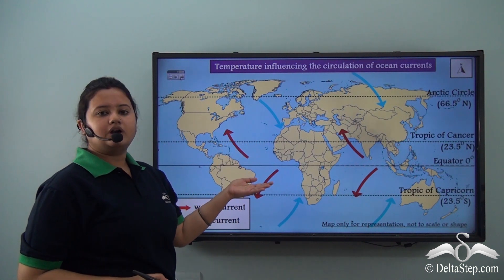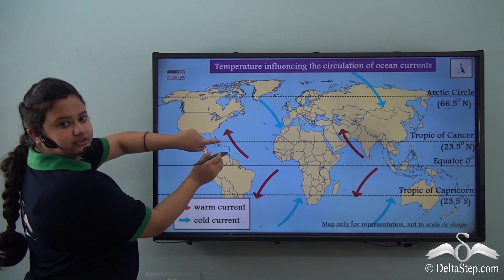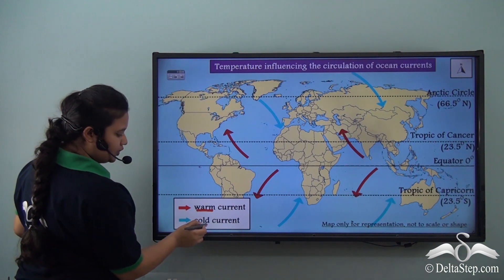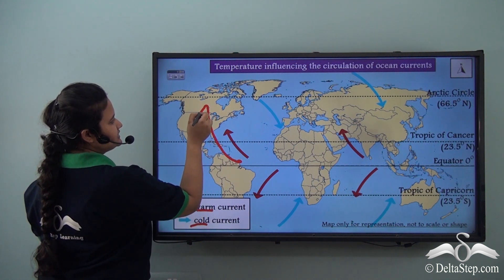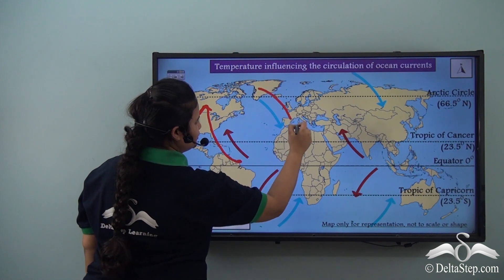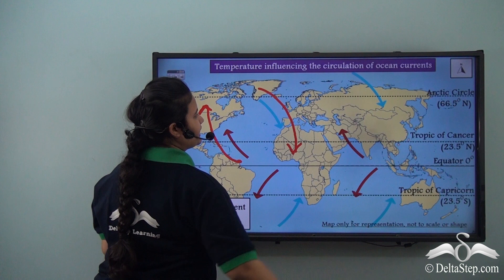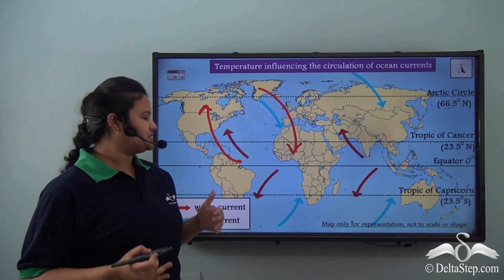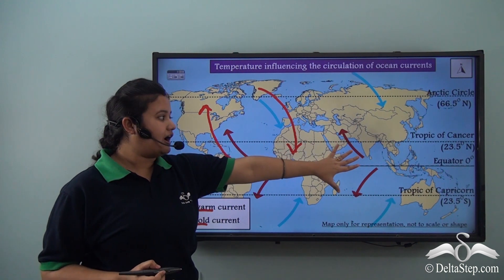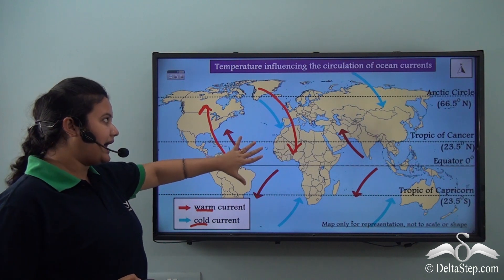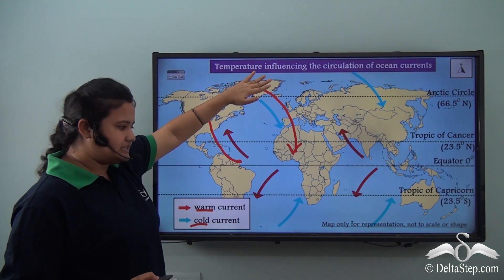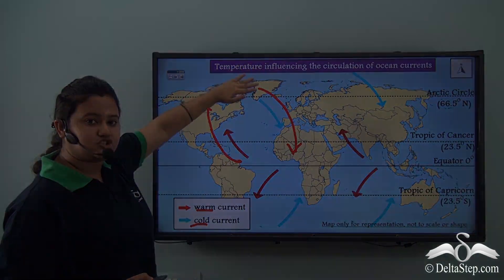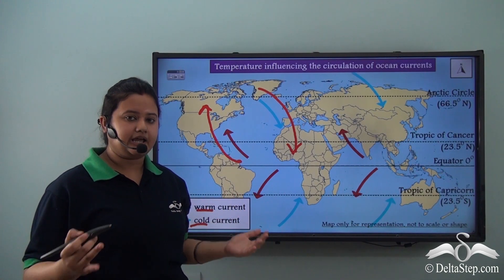Take a look at this world map. The arrows marked in red are warm currents and the ones marked in blue are cold currents. The warm currents travel from the equatorial region to the poles, and the cold currents travel from the polar region to the equatorial region. This happens because the equatorial regions are very hot, so they set up warm currents, and the polar regions are very cold, setting up cold currents.